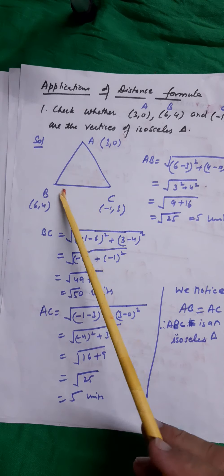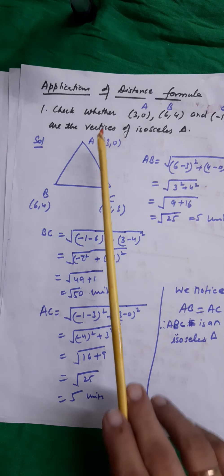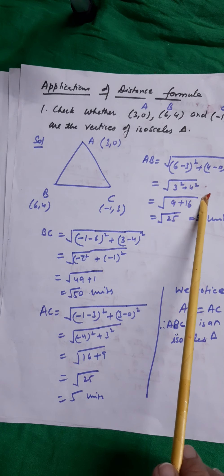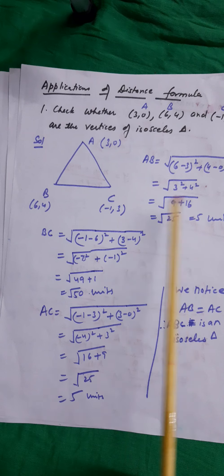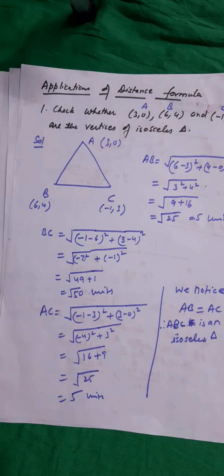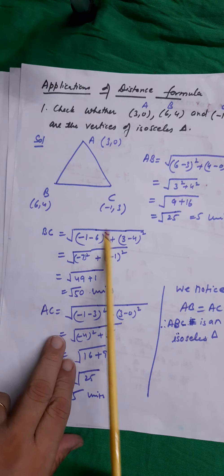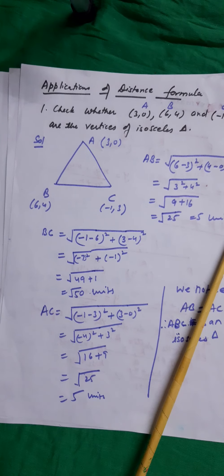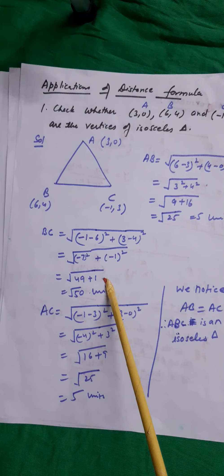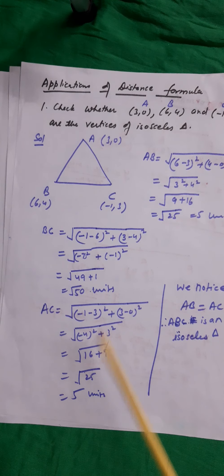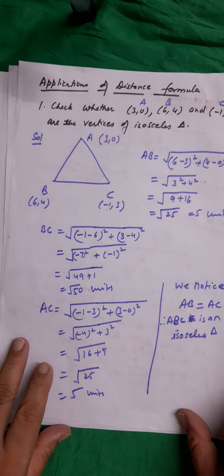Let's check AB: AB = √[(6−3)² + (4−0)²] = √(9+16) = √25 = 5 units. Now BC = √[(−1−6)² + (3−4)²] = √(49+1) = √50 units. We find that AC also comes out to be 5 units. Since AB = AC = 5 units, triangle ABC is an isosceles triangle.